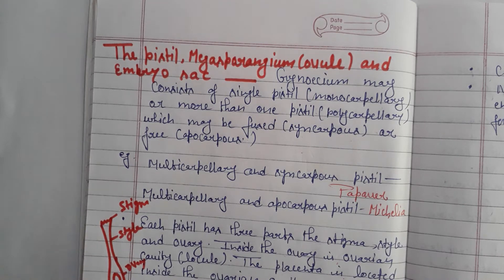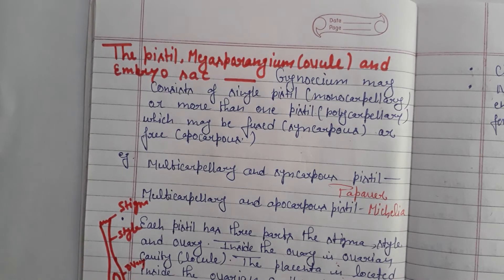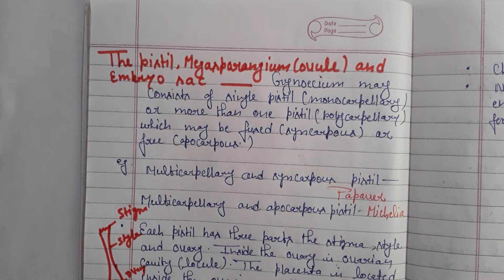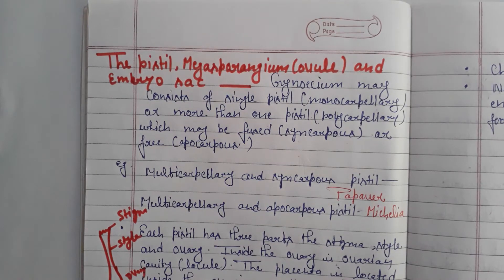The embryo is a stage of formation of a new baby or new seed inside the fruit, which will eventually make the new plant.